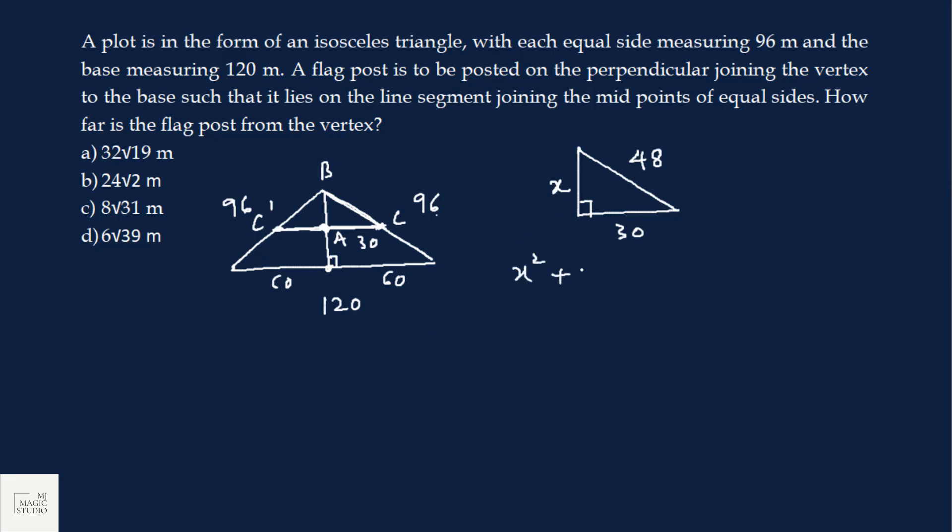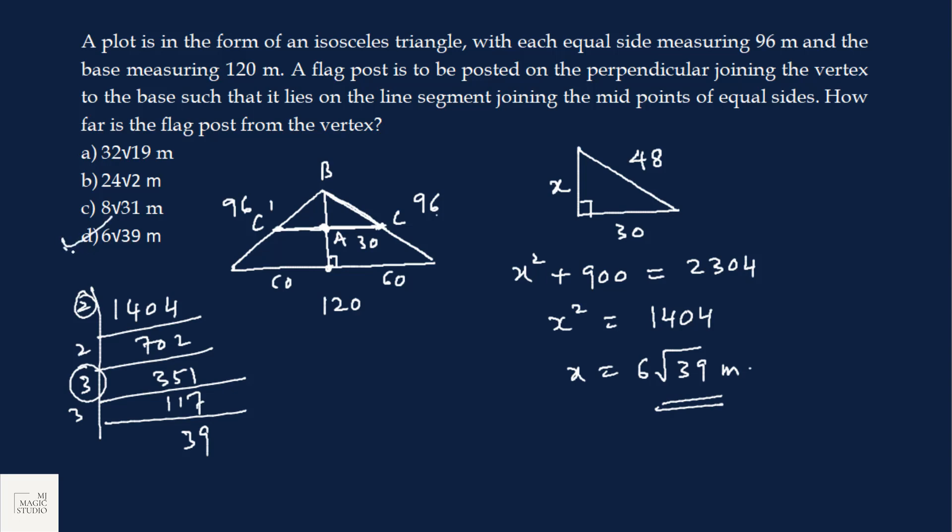So this is 30 and we know CB is half of the entire side 96, so this is 48. And this is perpendicular. That means this is a right angle triangle. We just need to find the value of x using Pythagoras theorem. x square plus 30 square is 900 equals 48 square, that is 2304. So x square is 2304 minus 900 is 1404. Let me factorize: 2, 702, 351, 3, 117, 339. So x will be 2 into 3, 6 root 39 meters. That we have in option D.